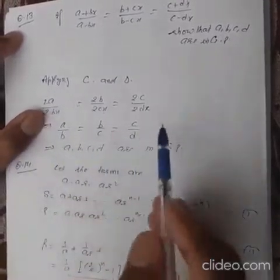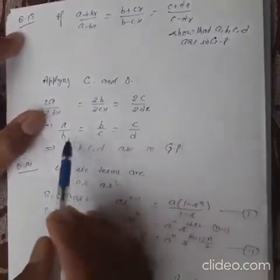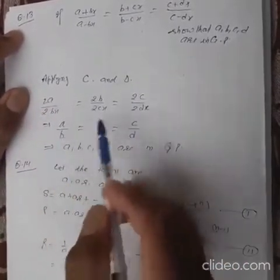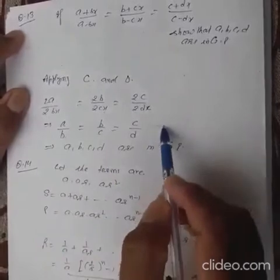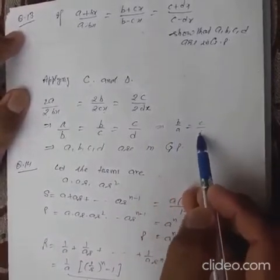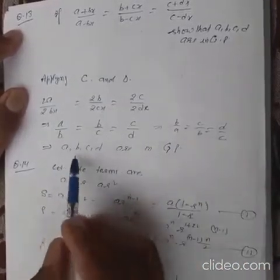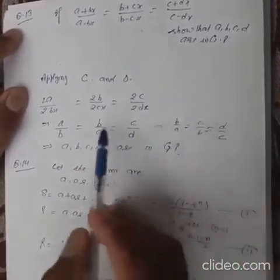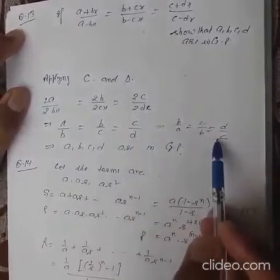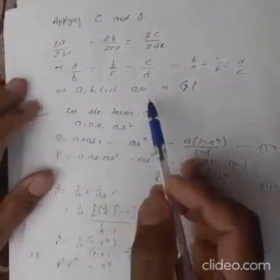After cancellation, we find A upon B equals B upon C equals C upon D. Therefore, taking reciprocals, B upon A equals C upon B equals D upon C. Hence A, B, C, D are in GP because their ratios are equal. I hope it is clear.